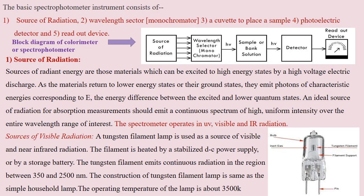The basic components of a spectrophotometer are: first, a source of light radiation; second, a wavelength selector also known as a monochromator; third, a cuvette also known as a cell to place the sample; fourth, a photoelectric detector; and then a readout device, which is generally a computer. When we discuss about the source of radiation...